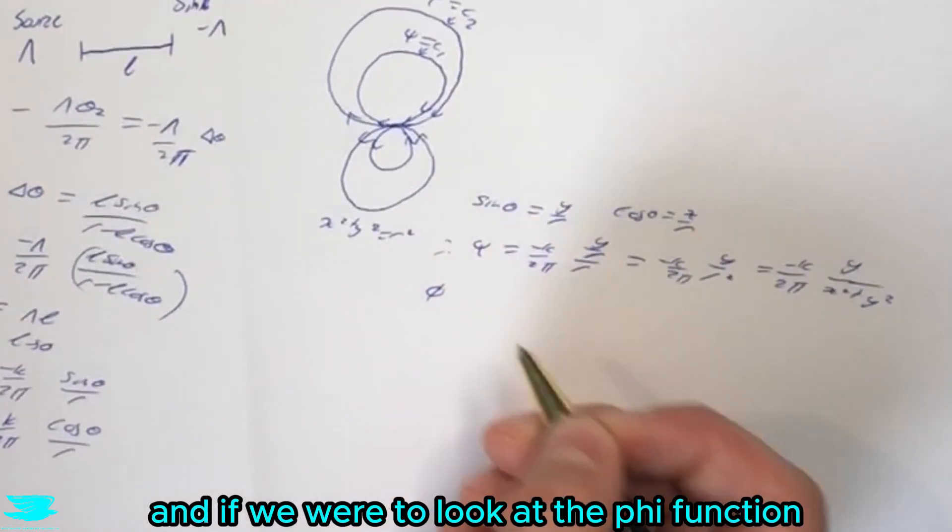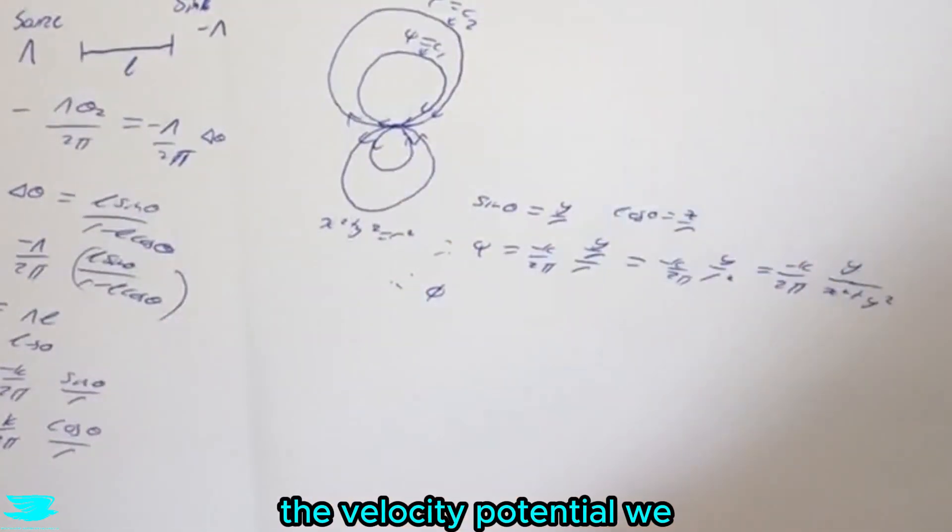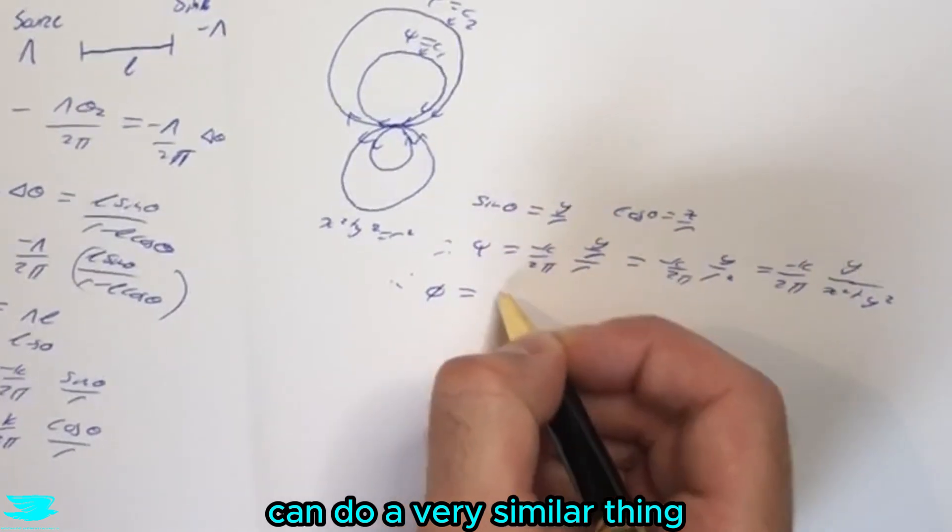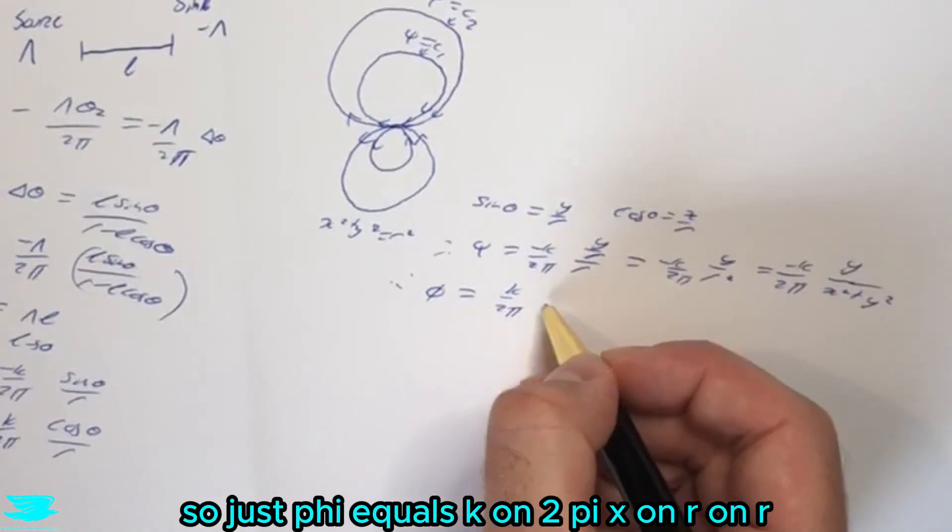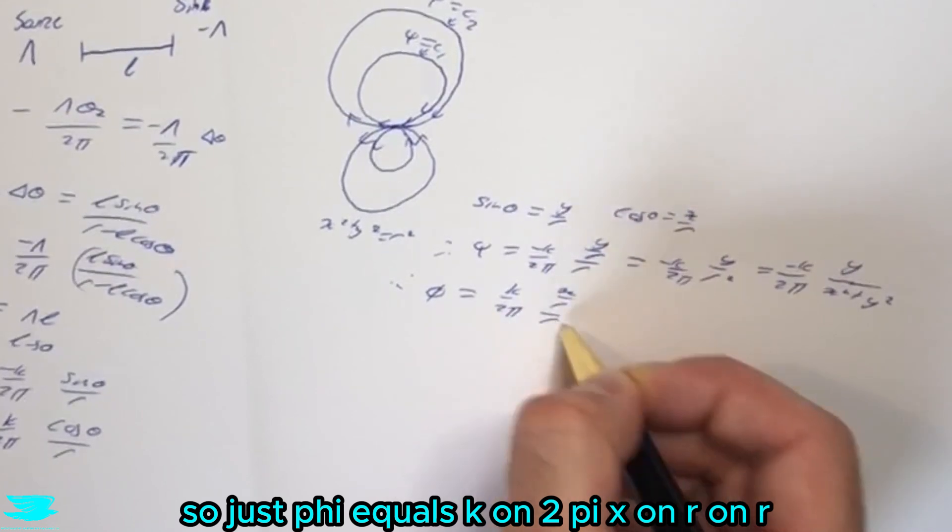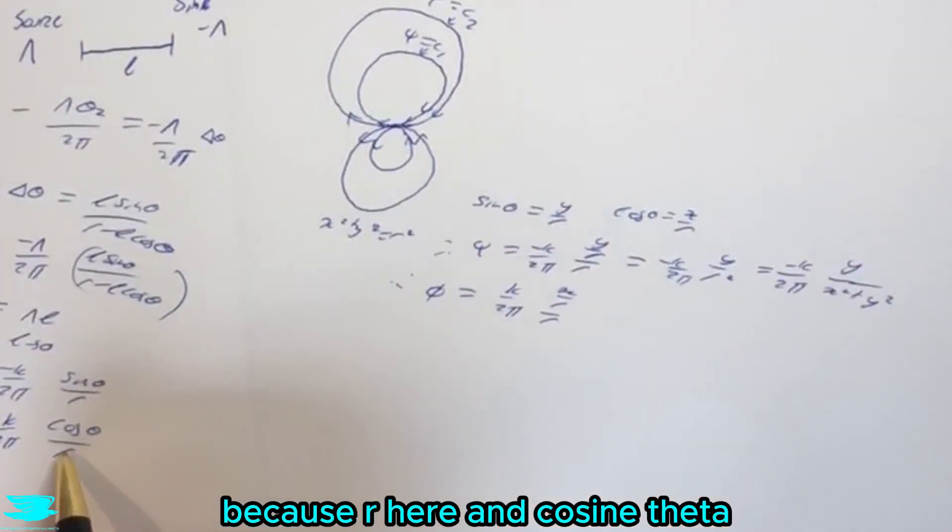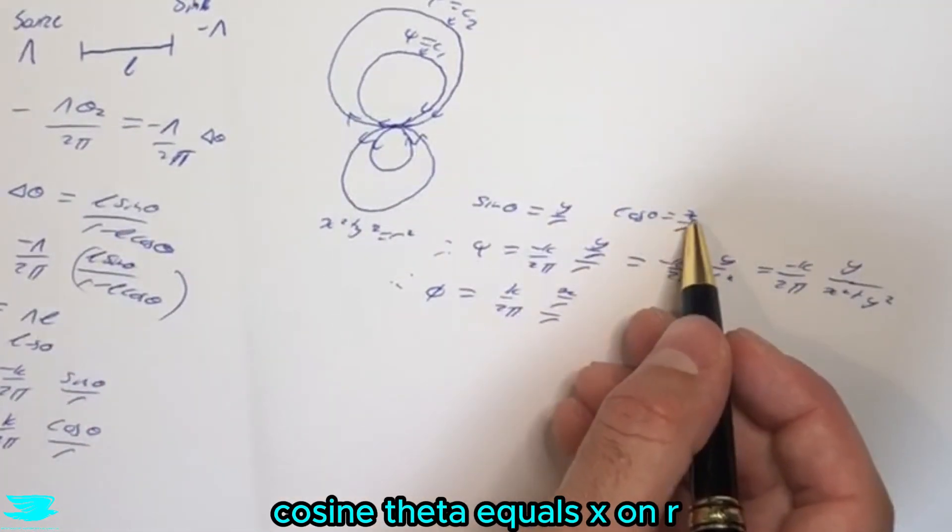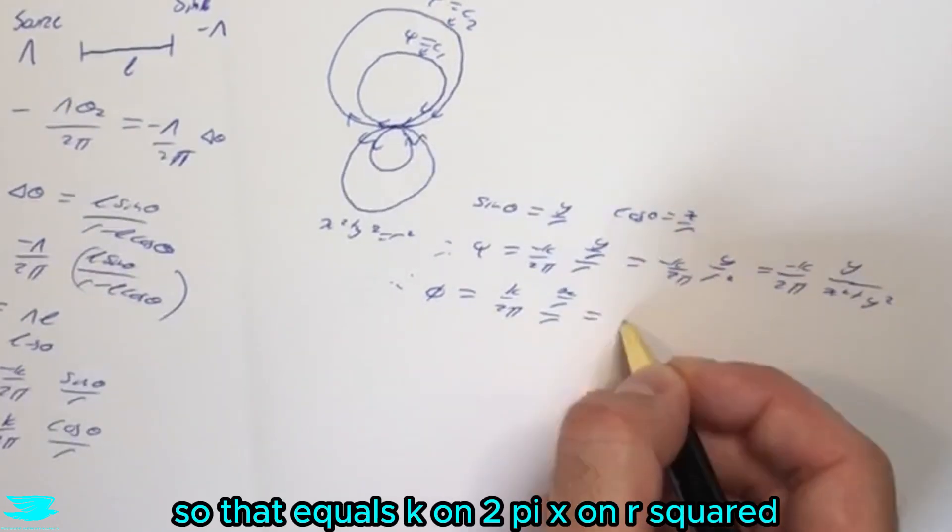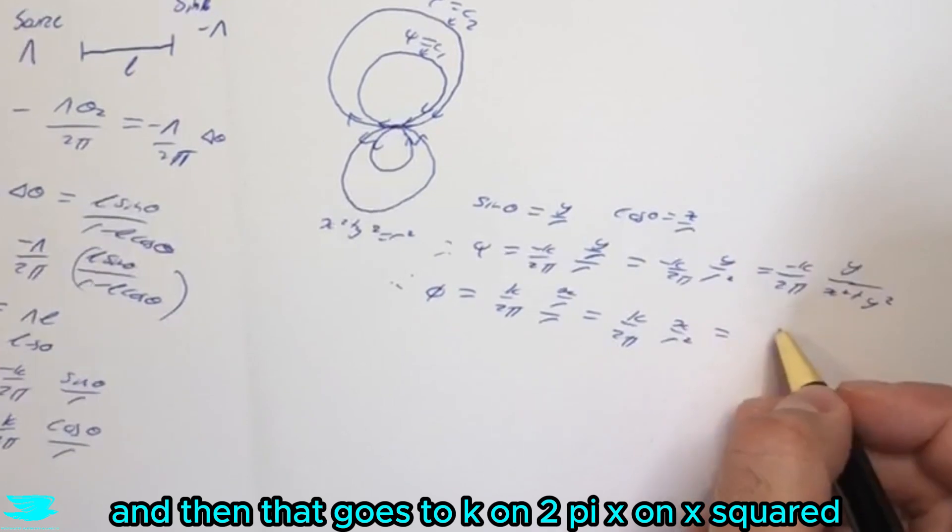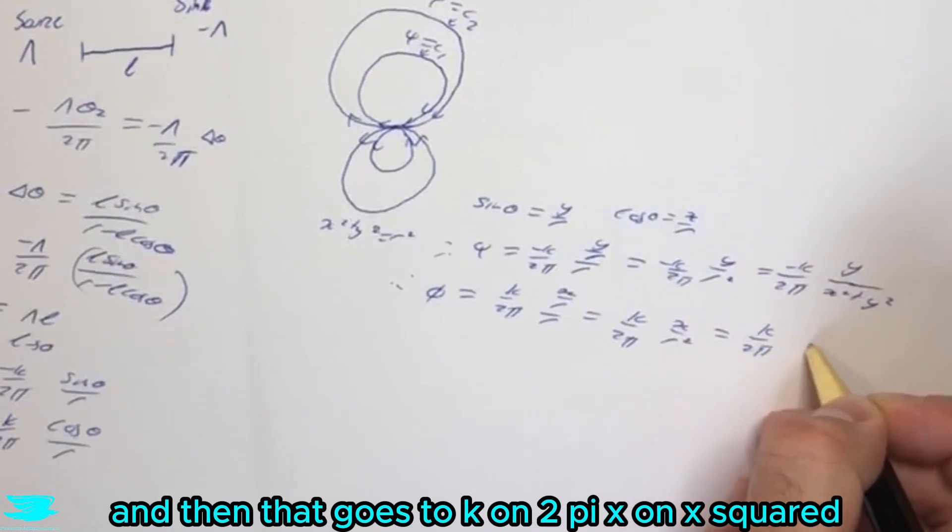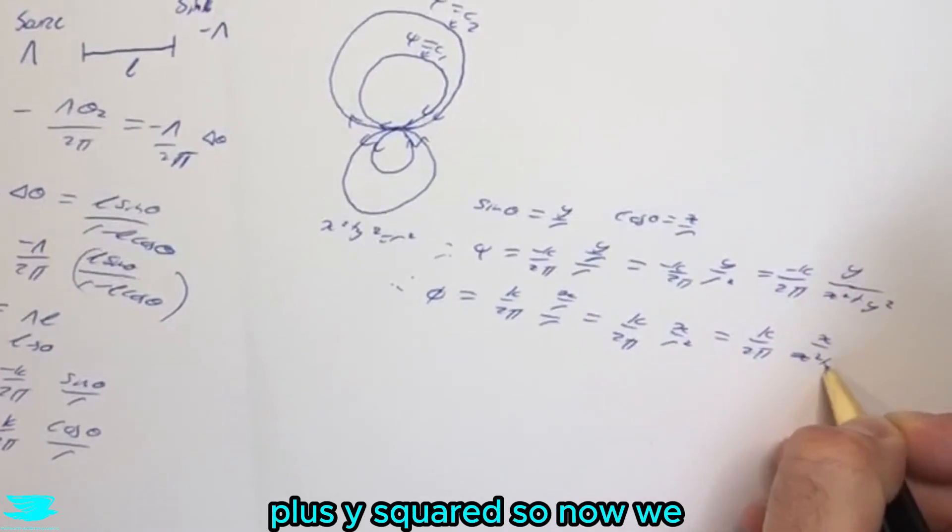And if we were to look at the phi function, the velocity potential, we can do a very similar thing. So phi equals k on 2 pi, x on r on r, because r here and cos theta, cos theta equals x on r. So that equals k on 2 pi, x on r squared, and then that goes to k on 2 pi, x on x squared plus y squared.